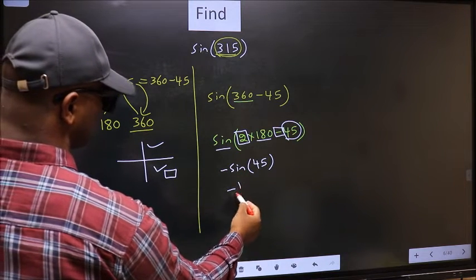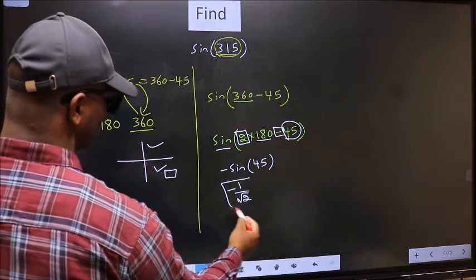So negative sin 45 is 1 over root 2. This is our answer.